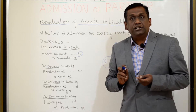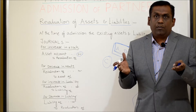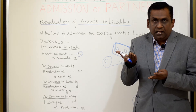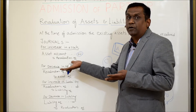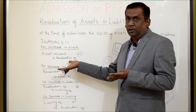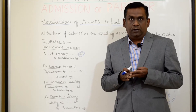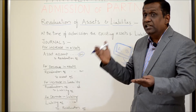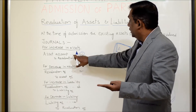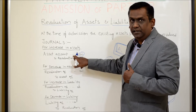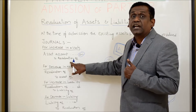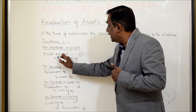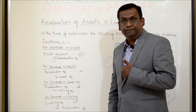Why am I crediting the revaluation account? Revaluation is a nominal account. Because of the incremental value in the asset, they are getting a benefit out of it — that is profit for them. All expenses and losses are to be debited in a nominal account, and all incomes and gains are to be credited. This asset increment is a benefit — income — so the revaluation account has to be credited as per nominal account rules. That is the reason I credited the revaluation account.